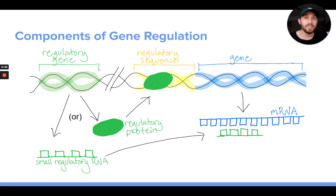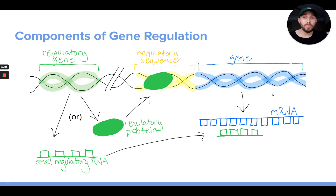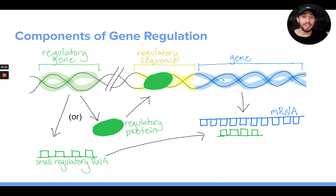When regulatory proteins bind to regulatory sequences in your DNA, they cause the expression or transcription of your genes to either increase or decrease. Some regulatory proteins bind to sequences in your DNA and cause certain genes to be transcribed more, while others cause certain genes to be transcribed less.